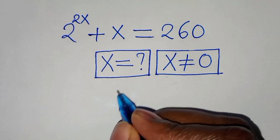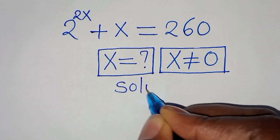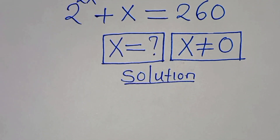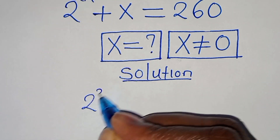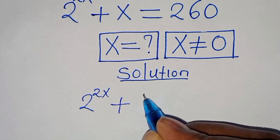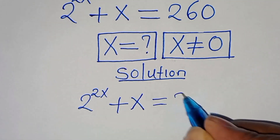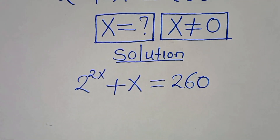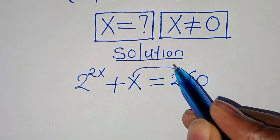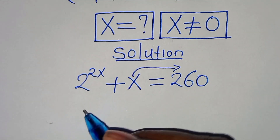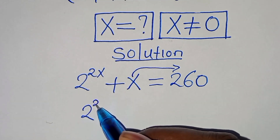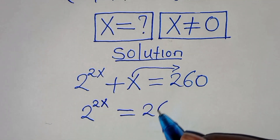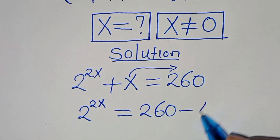Let's present a solution from here. We have 2 to the power of 2x plus x, this is equal to 260. The first step is to take x on the right-hand side, so that we have 2 to the power of 2x, this is equal to 260 minus x.